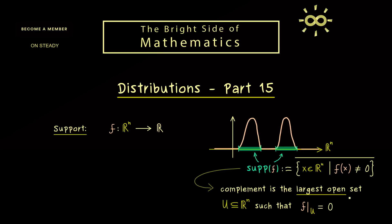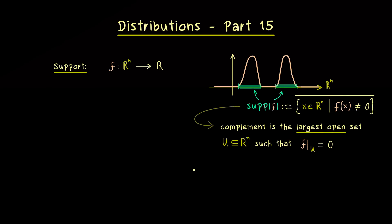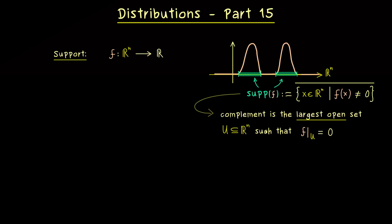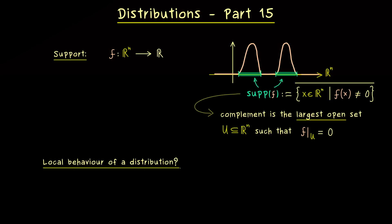This property — defining support via the largest open set where the function vanishes — is exactly what we have to do for distributions. This makes sense, because for distributions we cannot say what happens at a given point. However, by using test functions we can still say something about the local behavior of distributions. So let's take a distribution T, which is a linear functional defined on the test functions.